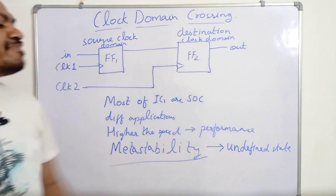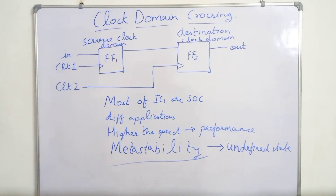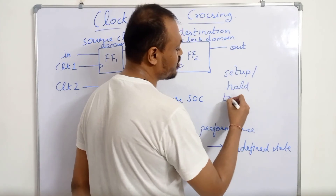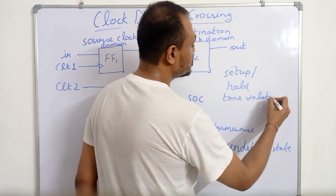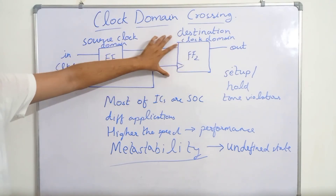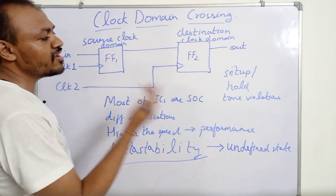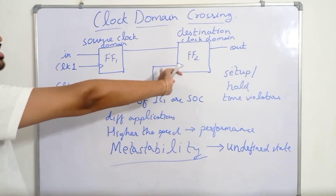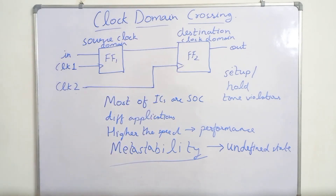Setup or hold time violations are easily possible when using different clock domains. Due to setup and hold time violations at the first flip-flop in the destination clock domain, the flip-flop will go into the metastable state. We only need to consider the first flip-flop of the destination clock domain, because all flip-flops after it are synchronized to that clock — only the first flip-flop can have setup and hold time violations.